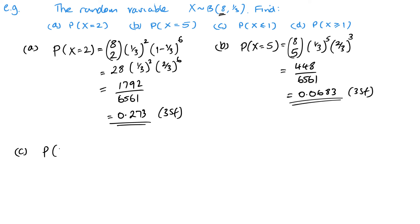Part C is a little bit different — this is a less than or equal to. When we look at the next section on cumulative distributions and cumulative probabilities, much like the normal distribution in S1, there will be another way of working some of these out. But at this point, when you've just got the formula, there's only one way. This is also the method when your values of P and N are not in the binomial tables. So P(X ≤ 1) = P(X = 0) + P(X = 1).